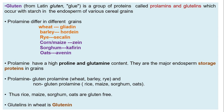Prolamins have a high proline and glutamine content. They are the major endosperm storage proteins in grains. There are two different types of prolamin: gluten prolamin and non-gluten prolamin.